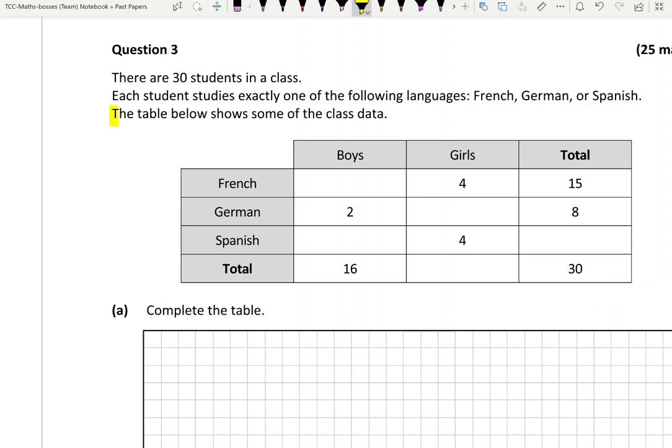They said it's a table, but this is called a two-way table. It's a method of organizing data when two categories are being considered, so it's not just one value being considered for every student.